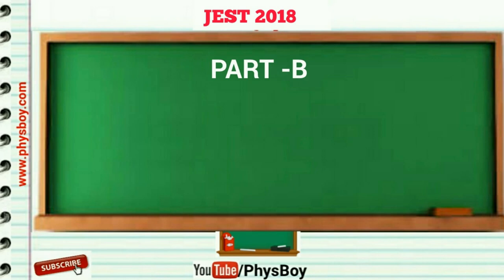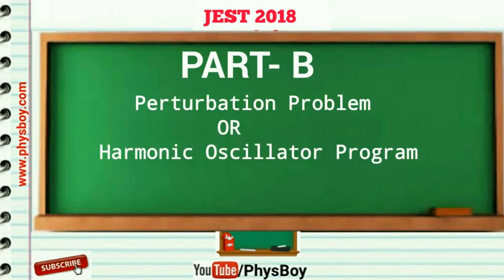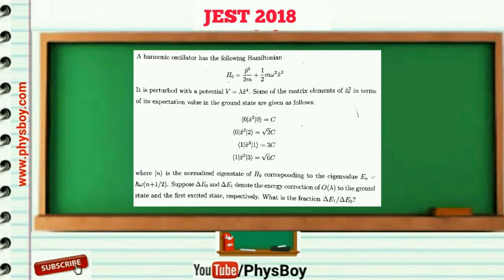In this video I am solving the perturbation problem of harmonic oscillator from Part B JEST 2018. The question: a harmonic oscillator has the following Hamiltonian. It is perturbed with a potential V equal to lambda times x to the power 4. Some of the matrix elements of x squared in terms of the expectation value in the ground state are given, where ket n is the normalized eigenstate of H-naught corresponding to eigenvalue E_n equal to h-bar omega times (n + 1/2). What is the fraction delta-E1 by delta-E0, where delta-E0 and delta-E1 denote the first-order energy corrections to the ground state and the first excited state respectively?